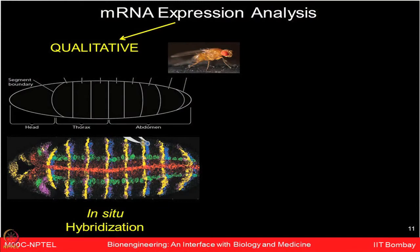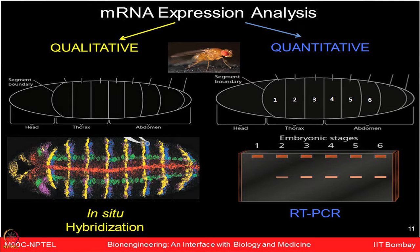Broadly, there are different ways of studying mRNA expression. Qualitative methods like in situ hybridization produce beautiful images showing RNA profiles. For quantitative analysis — knowing exactly how much RNA is expressed — you use reverse transcription PCR, with the latest addition being qPCR or real-time PCR, where gene amplification can be monitored in real time. Both qualitative and quantitative methods are important for studying gene expression profiles.